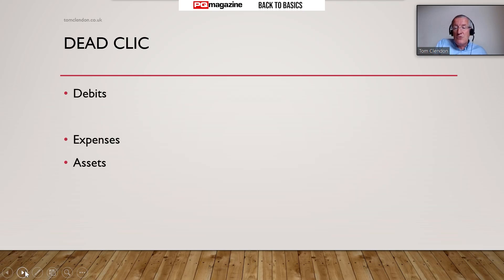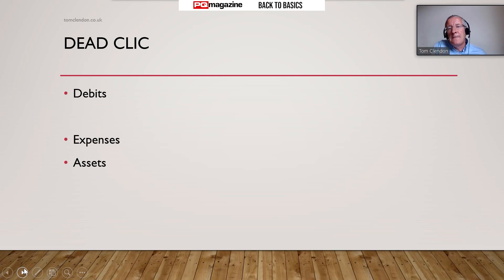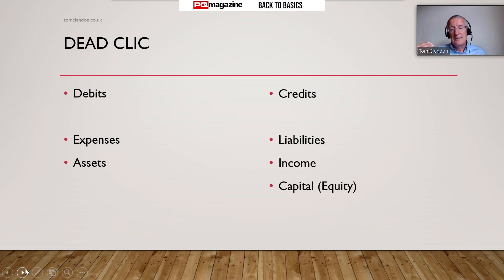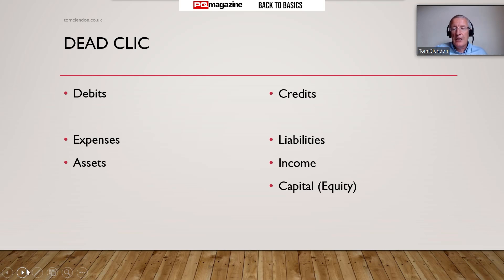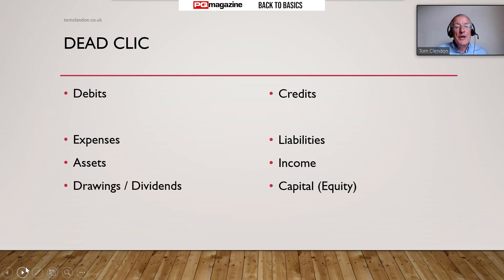There is another way of remembering debits and credits which some of you may like: the mnemonic DEAD CLIC. Debits are Expenses, Assets, and Drawings/Dividends if they go up - you debit expenses, you debit assets. The CLIC gives you the credits: Liabilities, Income, and Capital. The second D is Drawings or Dividends, which is effectively a reduction in capital, a reduction in equity, and would therefore be a debit. So DEAD CLIC is a way of remembering the rules.